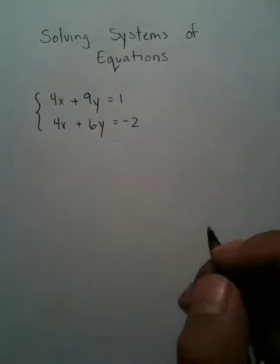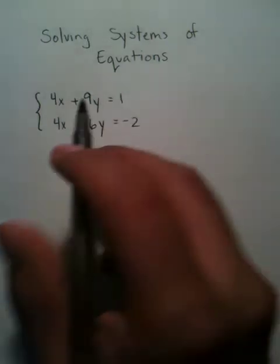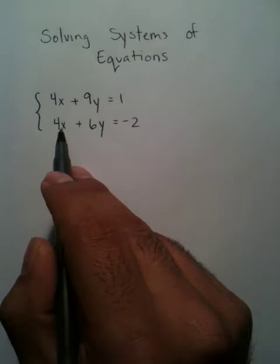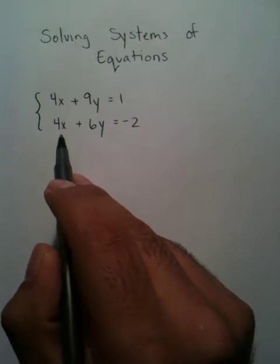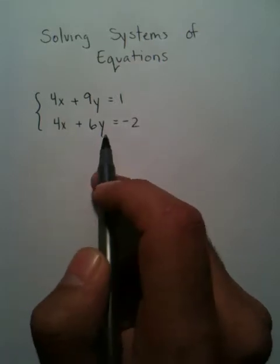When solving system of equations, you want to be able to eliminate either the x or y variable. In this problem, we have 4x and 4x lined right above each other, but no elimination is going to take place because 4 and 4 are positive, and we need one of these values to be negative.